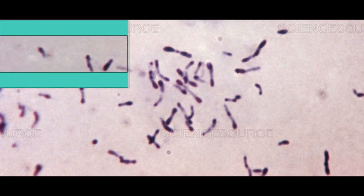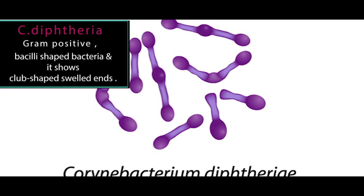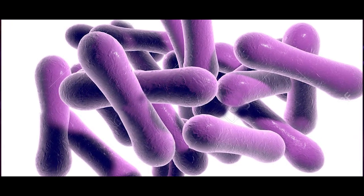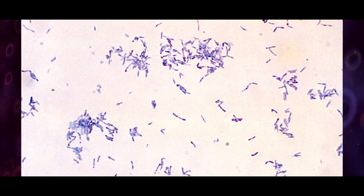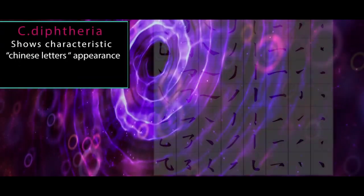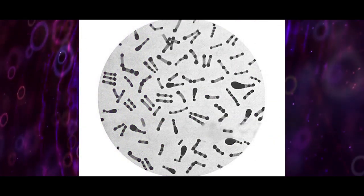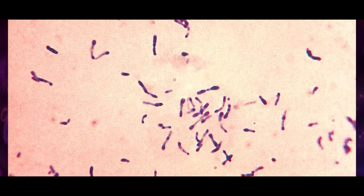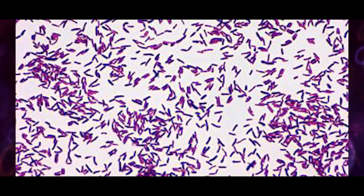Corynebacterium diphtheriae is a gram-positive bacilli-shaped bacteria and it shows club-shaped cells. On the other hand, Corynebacterium diphtheriae shows short-chain clumps with a characteristic Chinese letters appearance on Gram stain — this is a really nice clue to identify Corynebacterium diphtheriae. It is classified as actinobacteria, but does not form spores or branches as actinomycetes do.